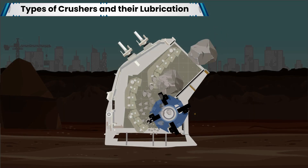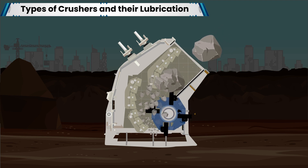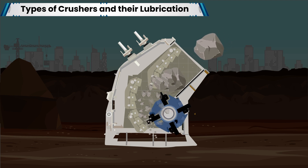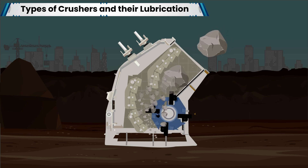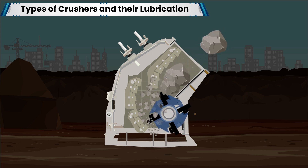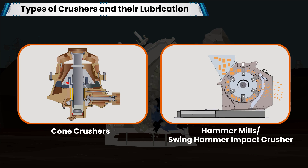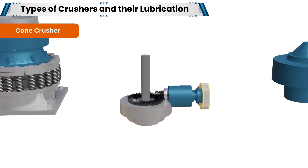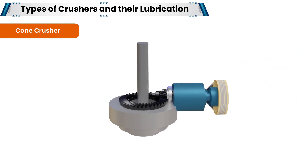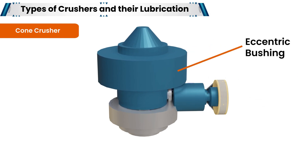Secondary crushers employ a combination of impact, attrition, and shear working principle to crush hard or medium-hard ores and rocks. These include the cone crusher and the hammer mill or swing hammer impact crusher. In a cone crusher, the motor drives the eccentric sleeve to rotate by the transmission device and the movable cone rotates driven by the eccentric bushing.